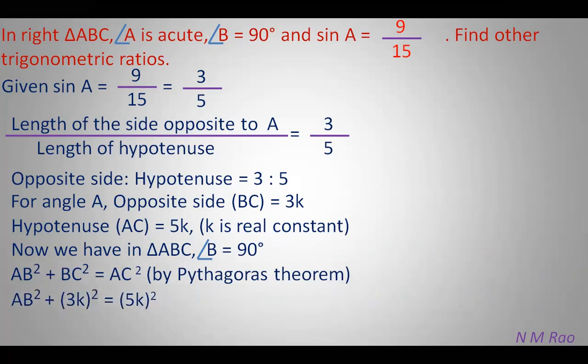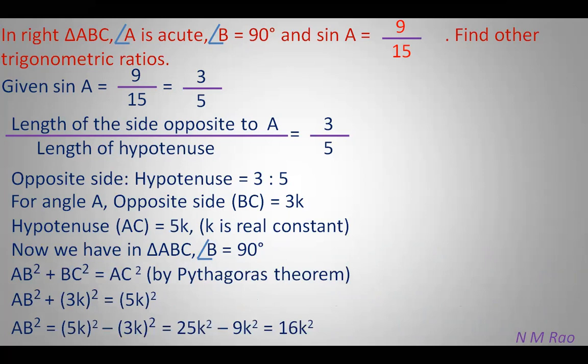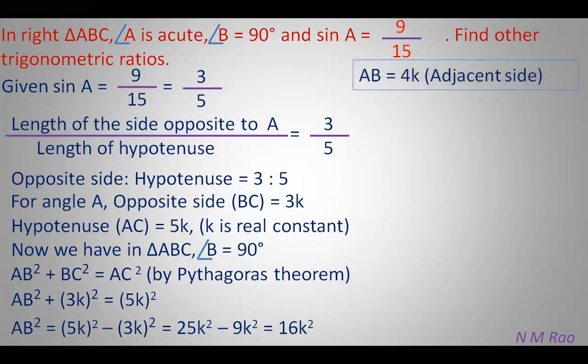Substituting BC as 3K and AC as 5K: AB² equals AC² minus BC², which is (5K)² minus (3K)² equals 25K² minus 9K² equals 16K². Therefore AB equals 4K. AB is the adjacent side to angle A.